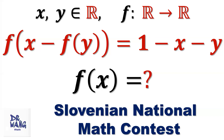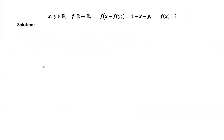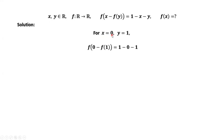How to get rid of x? This equation is true for all real numbers x and y. Therefore, we can pick special values for x and y. We pick x equals 0, because we want to get rid of x from both sides. If we replace x by 0, the right-hand side, we have 1 minus 0, which gives 1. How to get rid of this 1? We pick y equals 1. Therefore, the right-hand side equals 0.